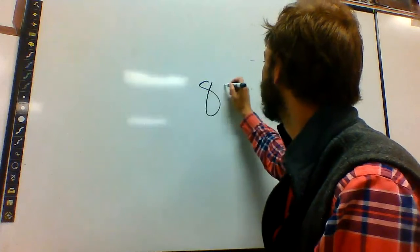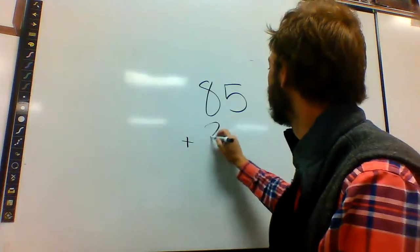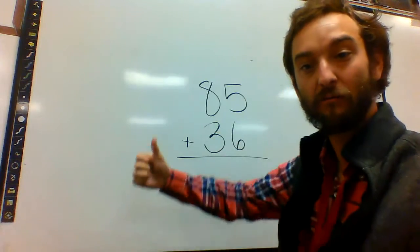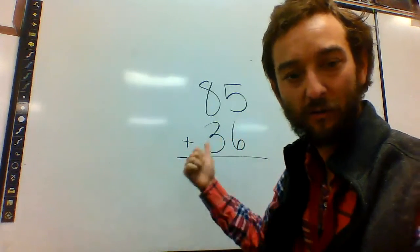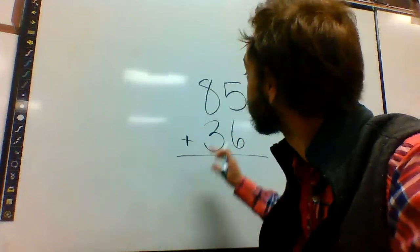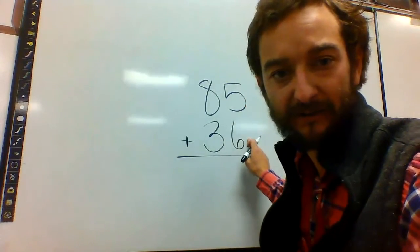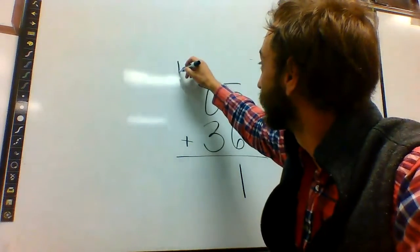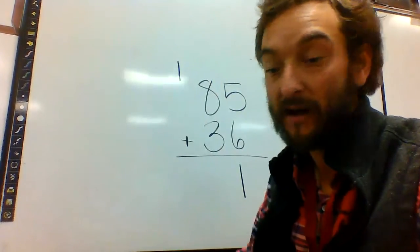Say we have 85 plus 36. So we always start on the right side. Always start on your ones, the smallest place. So you go 5 plus 6 is 11. Drop 1 here. Now the ten's place comes over here. Now you add.